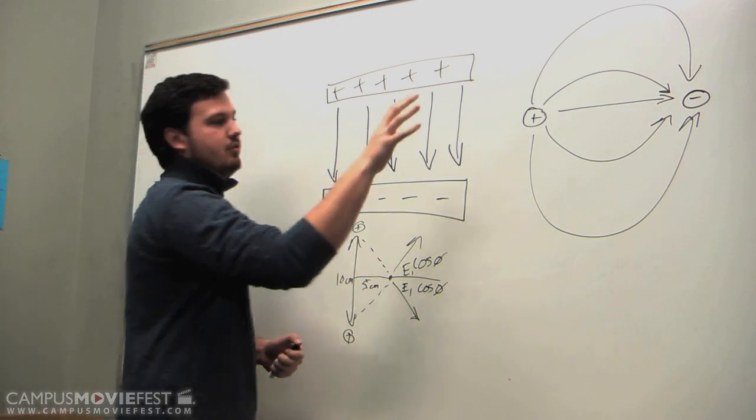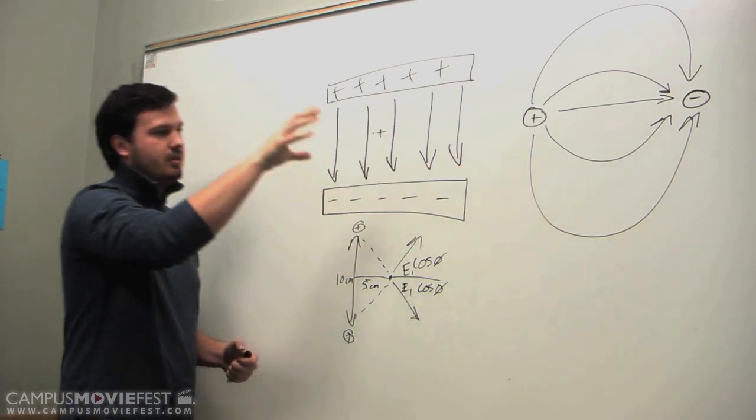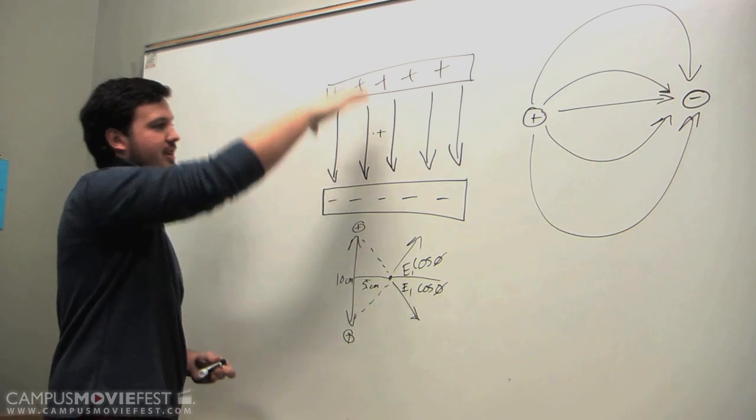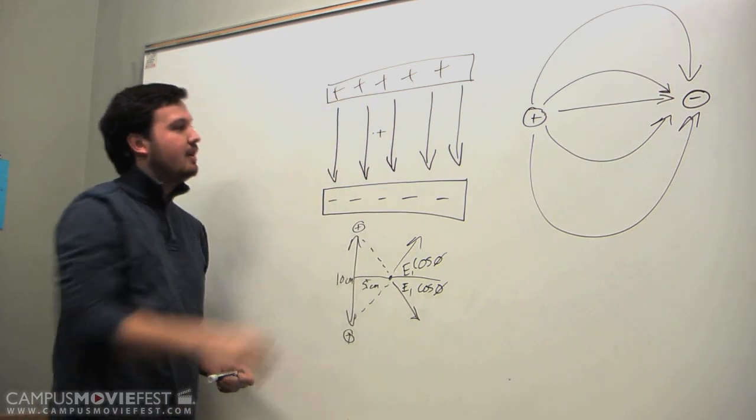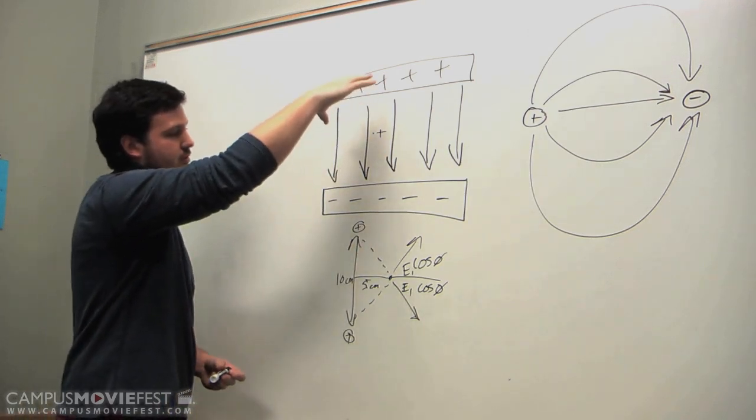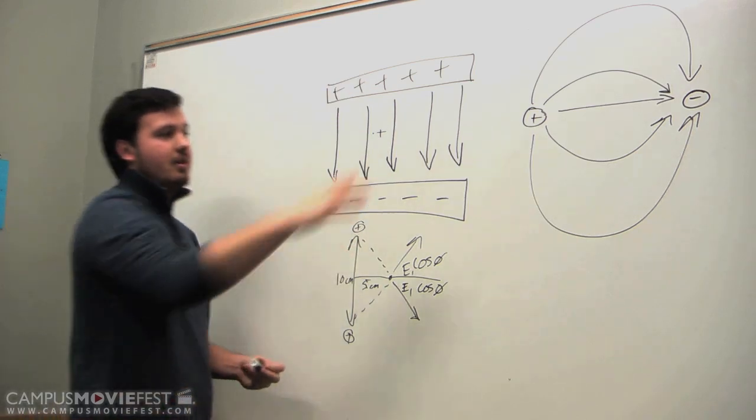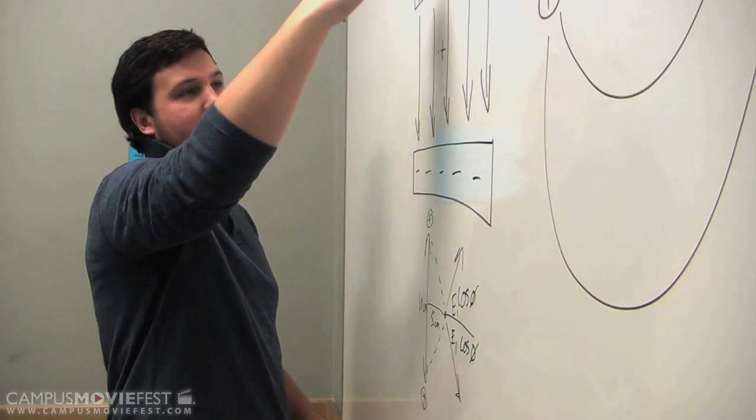But it is very different between plates and two points that are charged. Because with the plates, the electric field is parallel to the plates. But over here with the point charge, it is going to arc from this point to this point, because when it leaves the charge, it is always perpendicular to the surface of the charge. But it is going to be attracted to the negative.